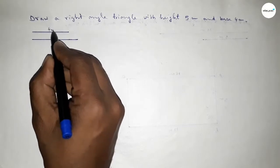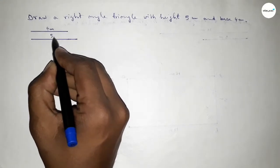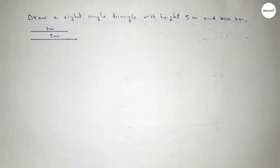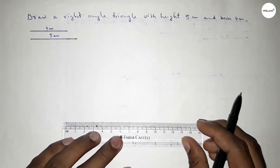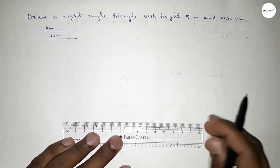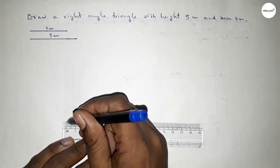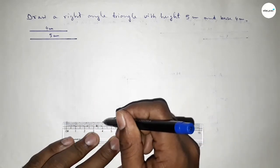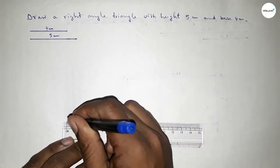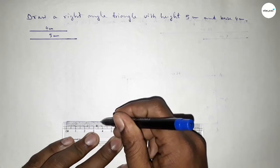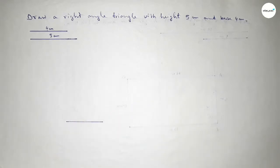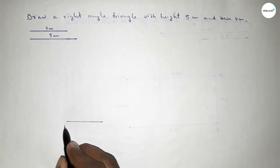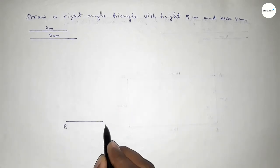This side is 4 centimeter and this side is 5 centimeter. Now we draw a line of length 4 centimeter as the base of the triangle. This is base 4 centimeter, taking here point B and here point C.